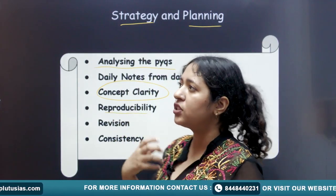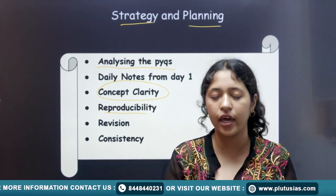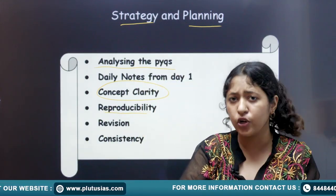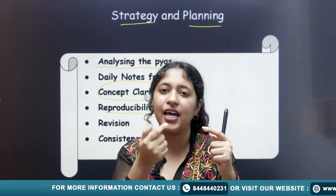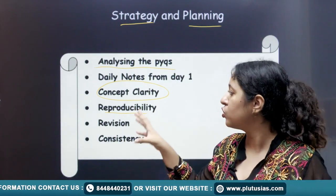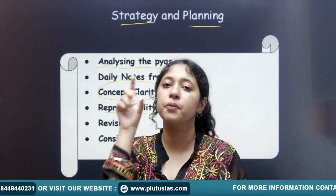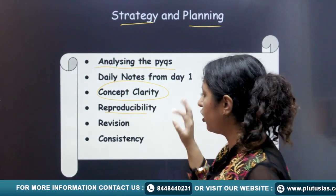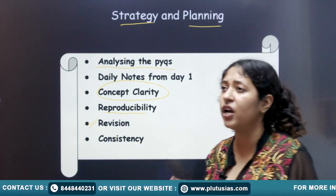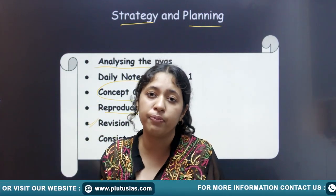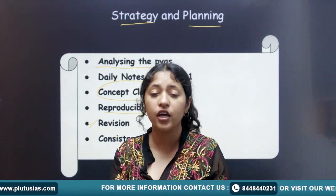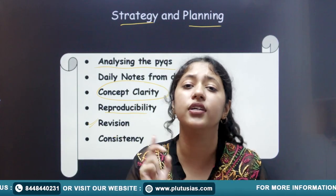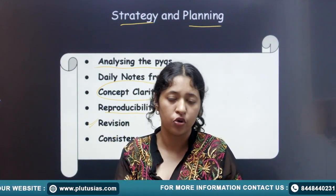The next point is reproducibility. Whenever you are studying a topic and learning something, the answer should be such that you can reproduce it on time. It should be in a sequential manner — you know what you will write first, second, and third — because you have limited time in the paper. The answer should be reproducible on the sheets. Revision is also crucial. In biology, you have to remember a lot of things — in paper one, cryptogams, phanerogams, the information is a lot. Keep revising things at least three to four times. Never skip your revisions; do them multiple times.